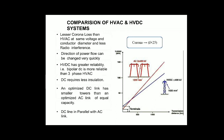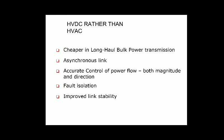HVDC has great reliability — bipolar DC is more reliable than 3-phase HVAC. DC requires less insulation because the peak voltage equals the RMS voltage in DC, so for the same voltage condition, HVDC system wires require less insulation. An optimized DC link has smaller towers than an optimized AC link of equal capacity. HVDC is cheaper in long-haul bulk power transmission, enables asynchronous links, accurate control of power flow in both magnitude and direction, fault isolation, and improved link stability. These are the advantages of HVDC compared to HVAC.